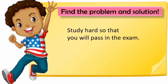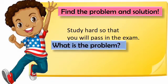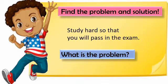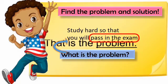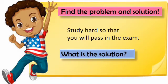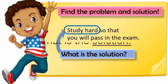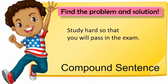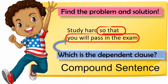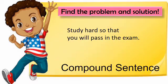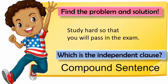Now from another given complex sentence, let us try to find the problem and solution. Study hard so that you will pass in the exam. What is the problem? The problem is that he has to pass in the exam. What is the solution? The solution is to study hard. Which is the dependent clause? So that you will pass in the exam — this is the dependent clause because of the word so that. The independent clause is: Study hard.